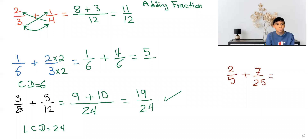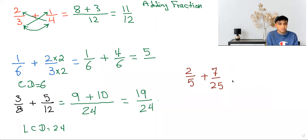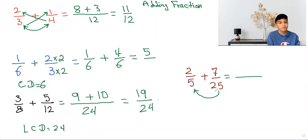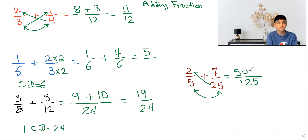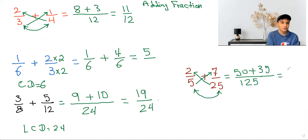Now I'll be showing you why I don't recommend the first method, by doing this example with it. You put a long line, and then you do 5 times 25, which will give you 125. So now you do 25 times 2, which will give you 50, and you write that on top. And then you put a plus sign. And then you do 5 times 7, which will give you 35. And then you add 50 and 35, which will give you 85, and you leave the 125 on the bottom.